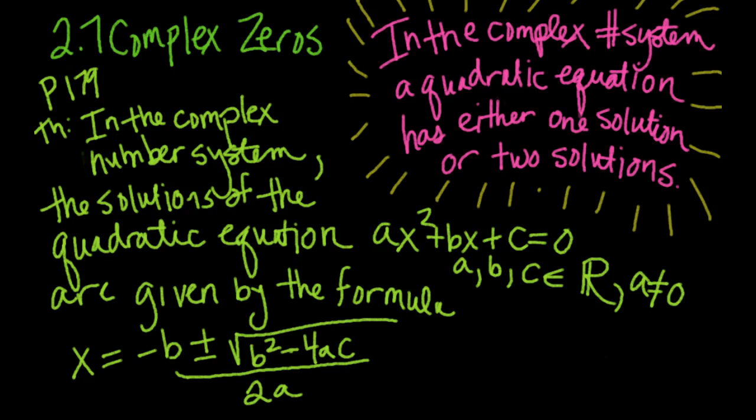On page 179 in your textbook, there's a theorem that says in the complex number system, the solutions of the quadratic equation ax²+bx+c=0, where a, b, and c are real numbers and a is not equal to zero, are given by this formula. Have you seen this formula before? Yes, it's the quadratic formula.